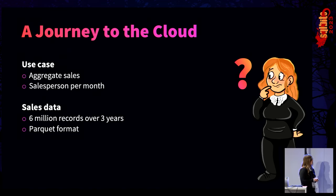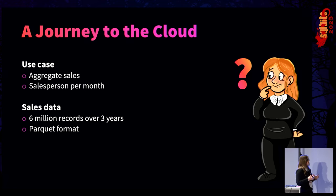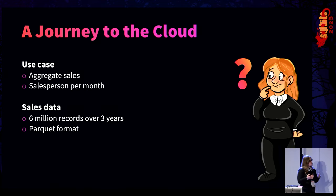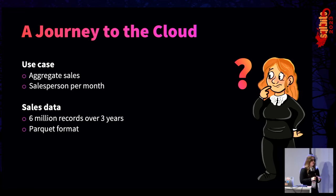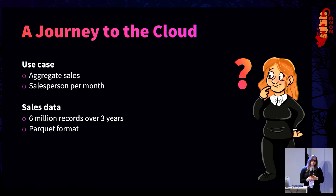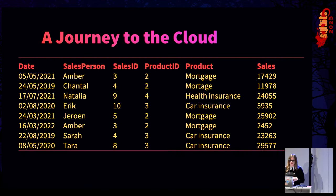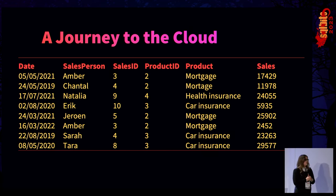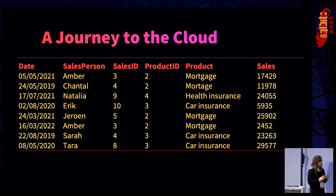So jokes aside, what does she need to do? Her manager came to her and said: Alice, we want to aggregate some of our sales data, because I want to know what salespeople outperformed from month to month — who sold the most things? She has quite a lot of sales data: about six million records over three years. We're going to store that in Parquet format. The data includes a sale date, the salesperson, a sales ID, product ID, product type, and sales amount — mortgages, health insurance, and so on.